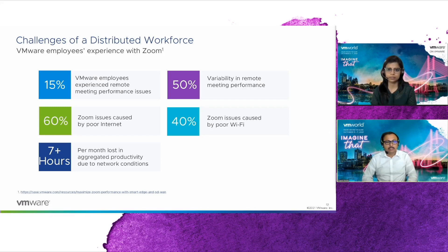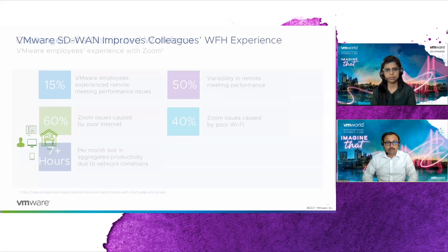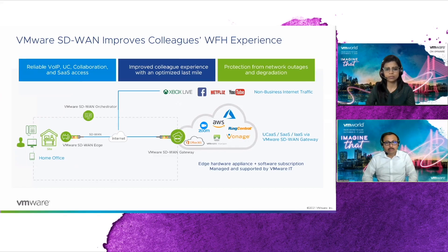Edge Network Intelligence provides out-of-box integration with Zoom using an API connector. After running the reports, we were able to identify that approximately 15% of VMware employees were experiencing remote meeting performance issues. Over 60% of these issues were caused by poor internet, and considering these stats, more than seven hours per month per user was our productivity loss.